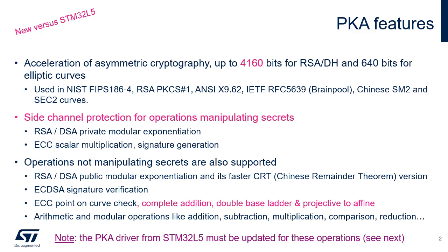Supported operand sizes are up to 4,160 bits for RSA and DH and up to 640 bits for ECC. Binary curves, Edwards curves, and curve 25519 are not supported by the PKA.